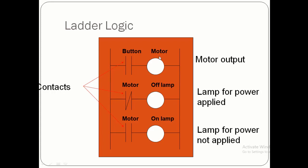When a motor is on, a normally closed contact associated with it will open. Because this motor acts like a relay — when the relay is energized, its normally closed contact becomes normally open, and the normally open contact becomes normally closed. So when the motor is energized, the normally closed contact opens and the output lamp will be off.